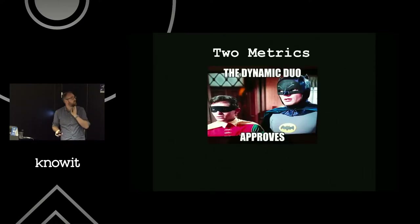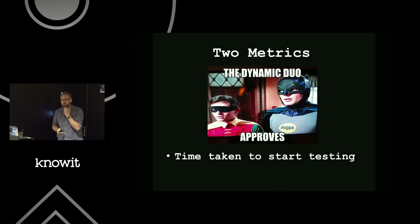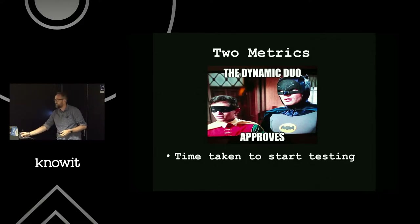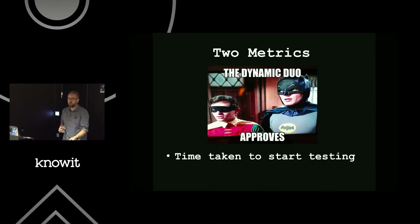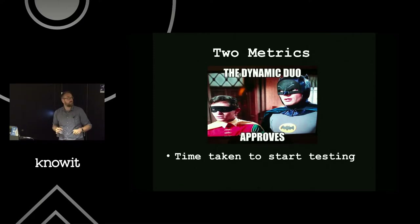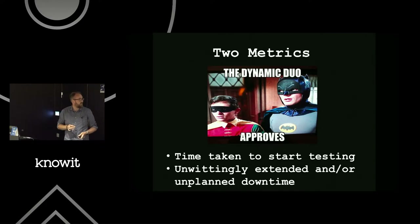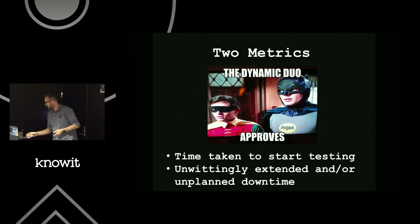I'm going to talk about two metrics — two examples. The time taken to start testing is always an interesting testability metric. If a developer says we've built this environment and it then takes you two days to get that build up and running before you can start testing it, the time taken to testing is too long, and I think it affects the quality of the testing. And then extended and/or unplanned downtime — if you have a lot of this, maybe you're not testing in the right areas or thinking about testability enough.